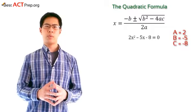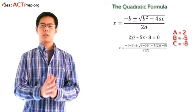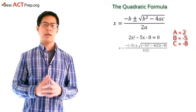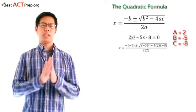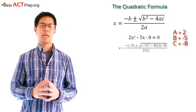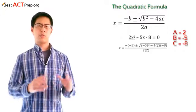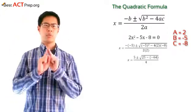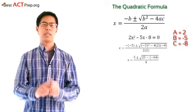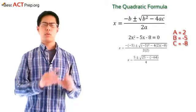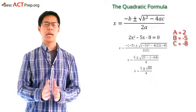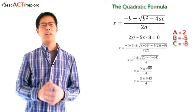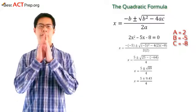Now, plugging these numbers in, we're going to have negative negative 5 plus or minus the square root of negative 5 squared minus 4 times 2 times negative 8, divided by 2 times 2. And then solving the equation, we're going to first do the part inside the square root. Negative 5 squared is 25, and 4 times 2 times negative 8 equals negative 64. 25 minus negative 64 equals 89, and the square root of 89 is about 9.43. And then doing the denominator: 2 times 2 equals 4.